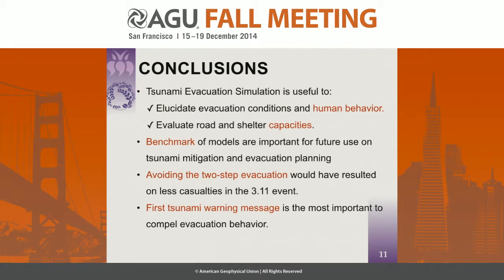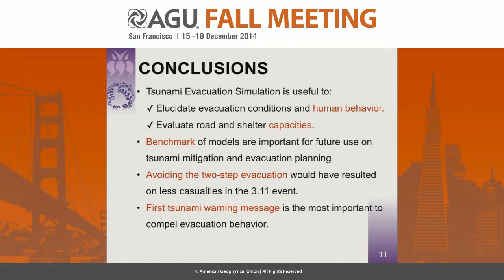We have time for a quick question. Question: Did the secondary evacuation spot end up being high enough for people to survive? Answer: Yes. Actually, even the first building — the community center — saved 43 people. So even if people had stayed there, some would have survived. But the second building, a three-story structure, was definitely better and much safer.